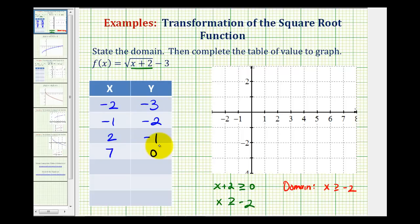Let's go ahead and plot these four points and see what we have. Negative two, negative three. Negative one, negative two. Two, negative one. And seven, zero. So here's the graph of the given function. Notice how this does verify that our domain would be x is greater than or equal to negative two. The function starts here at x equals negative two and then moves to the right.